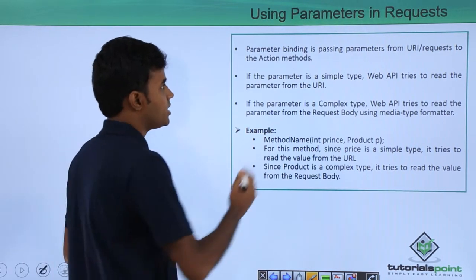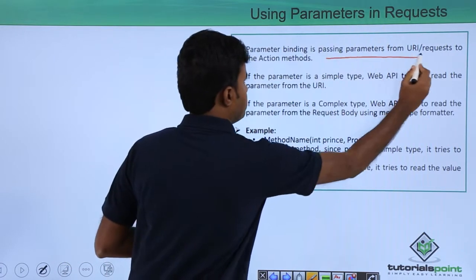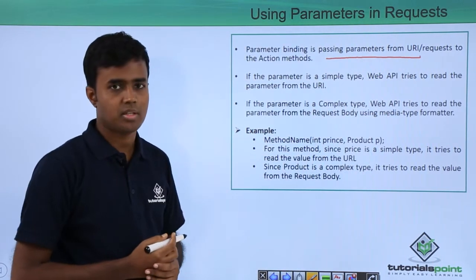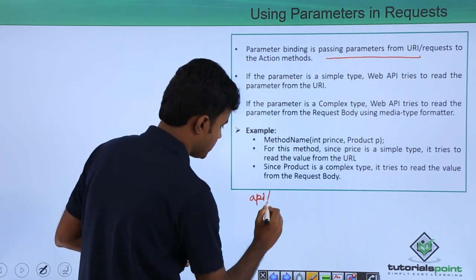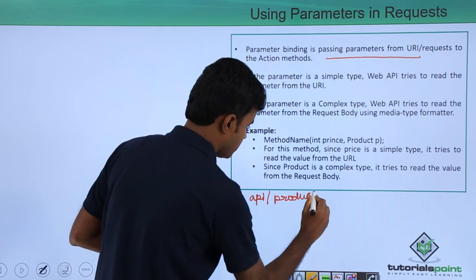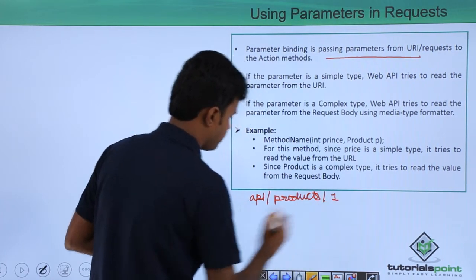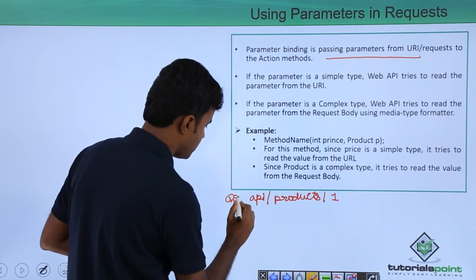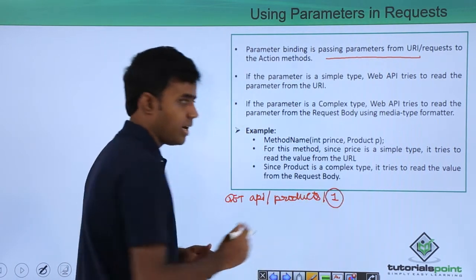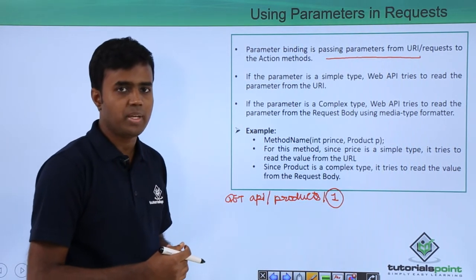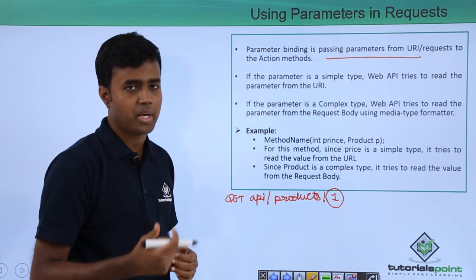Parameter binding is passing parameters from URI to the action methods. For example, I have a URI like API slash products slash 1 and this is a get method.